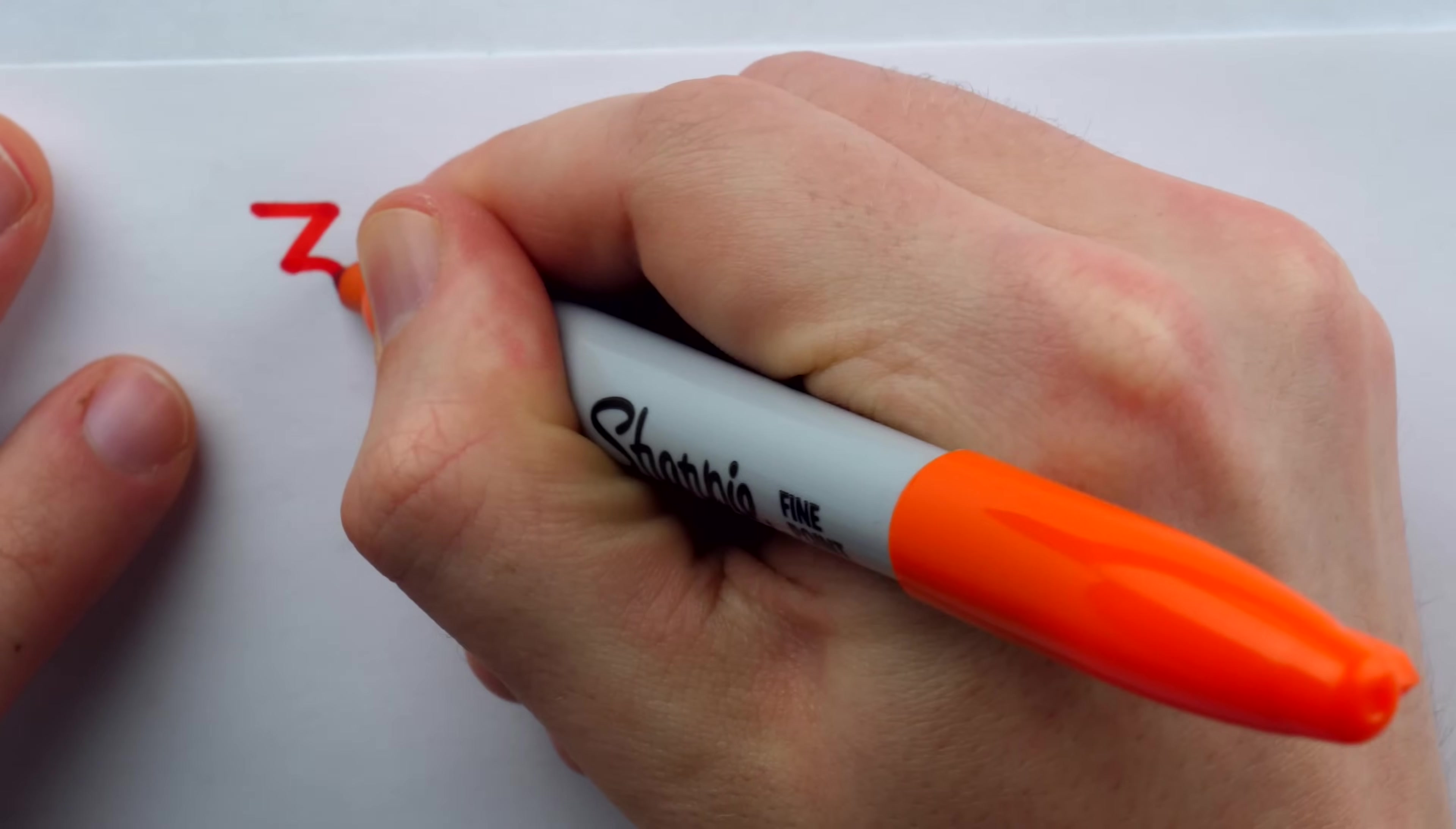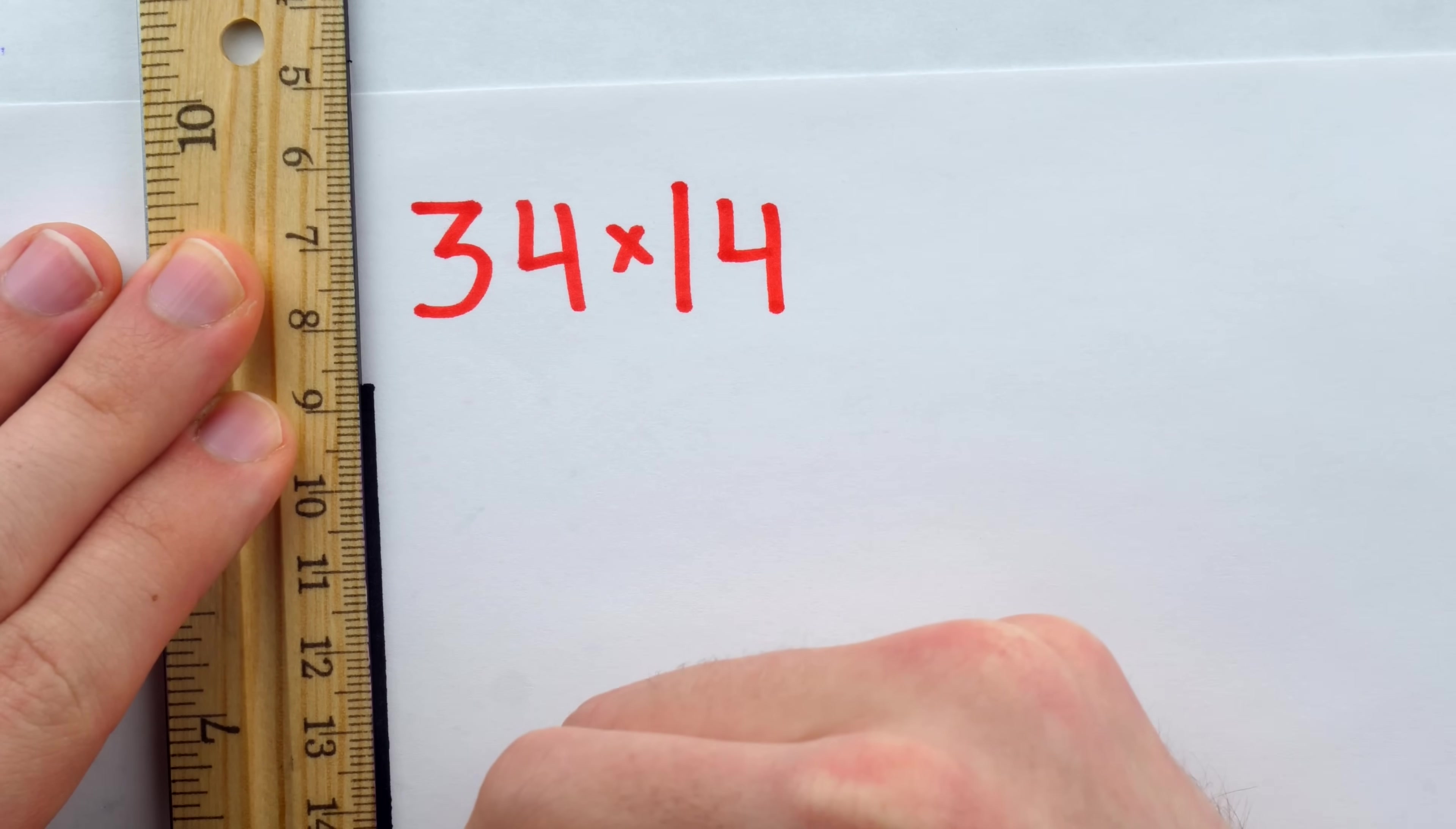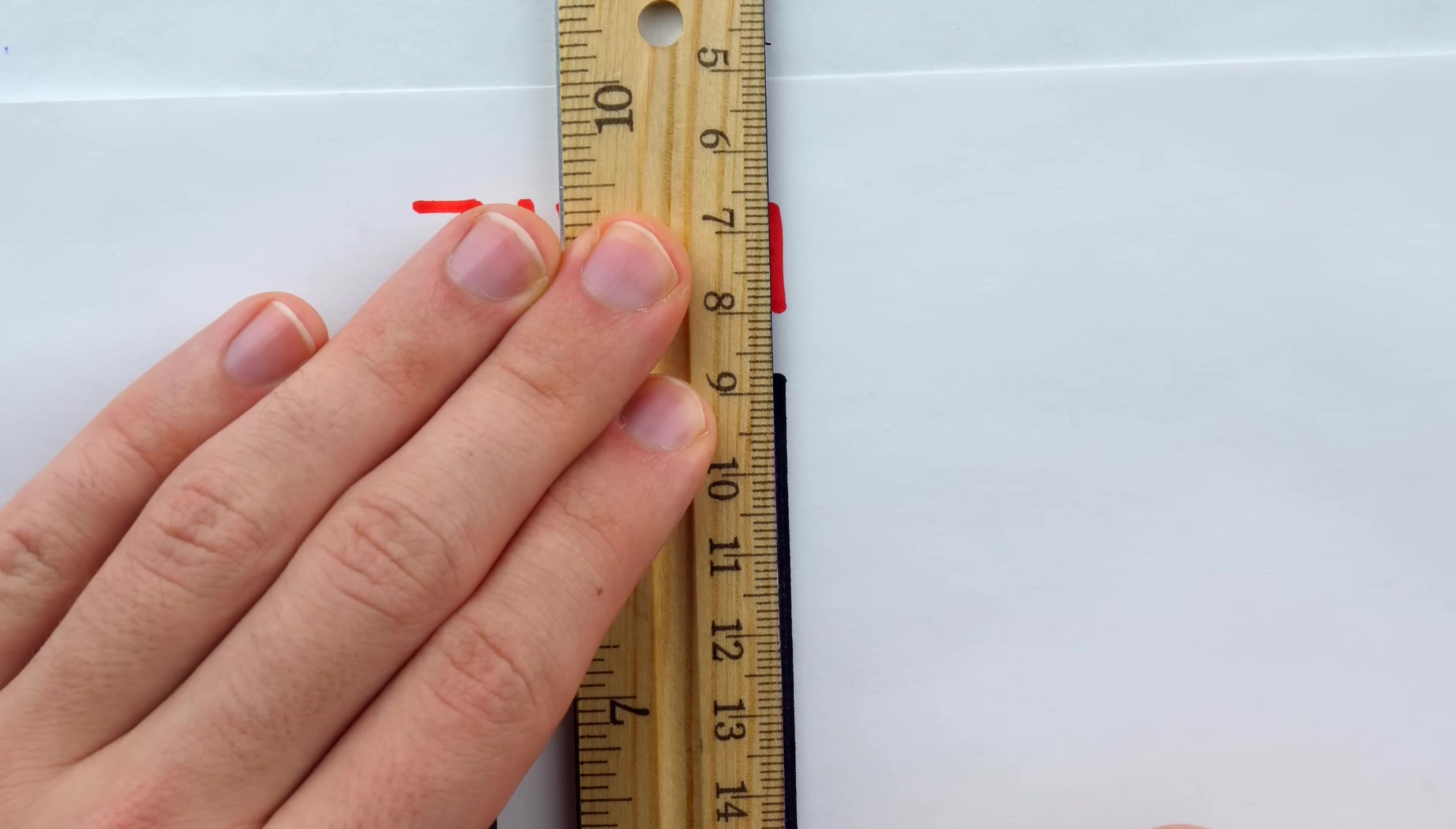As a quick example of carrying out this method with some more care, consider doing 34 times 14. Again we have three vertical lines for the three 10s, and then some space and four vertical lines for the four units.